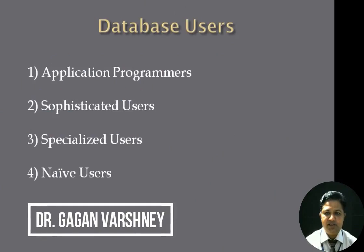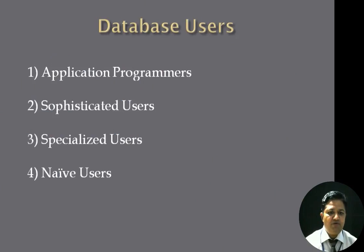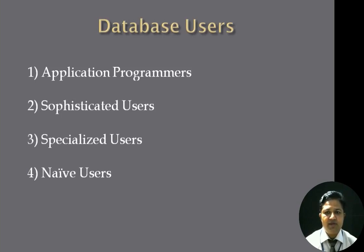Hello my dear friends. In this flip class we will discuss about database users. There are four major types of database users: number one, application programmers; number two, sophisticated users; number three, specialized users; and number four, naive users. A database is a collection of data, stored in terms of tables. Tables contain columns and rows — columns are known as attributes, while rows contain the values at a particular column.